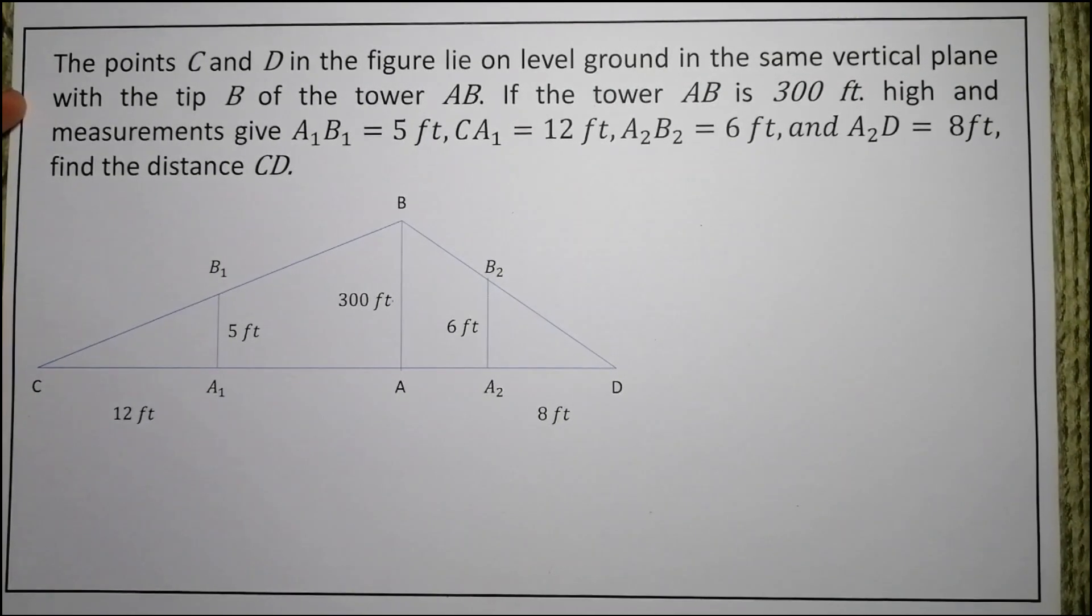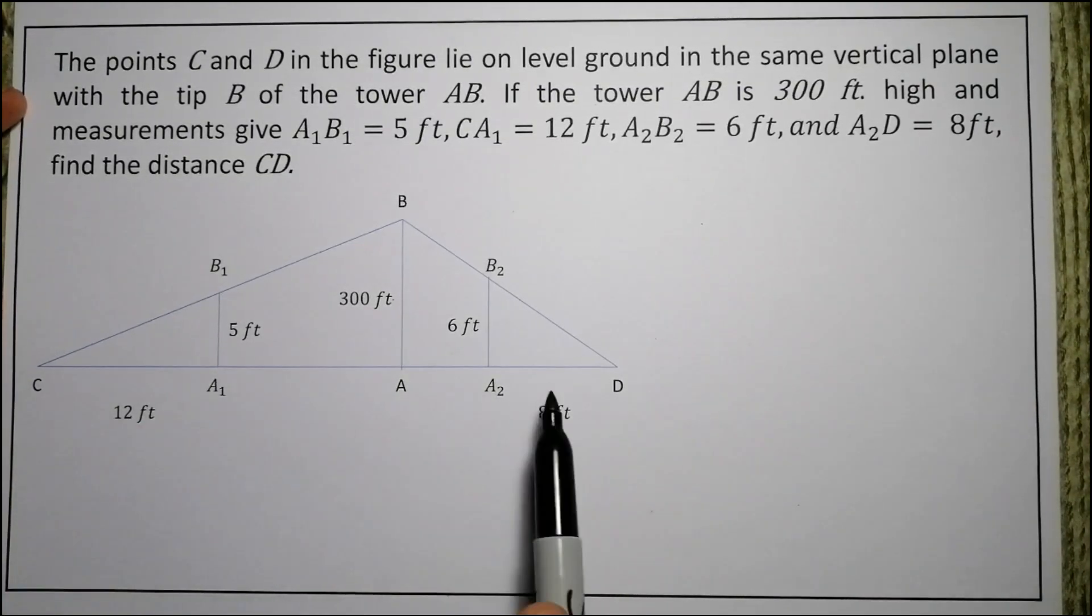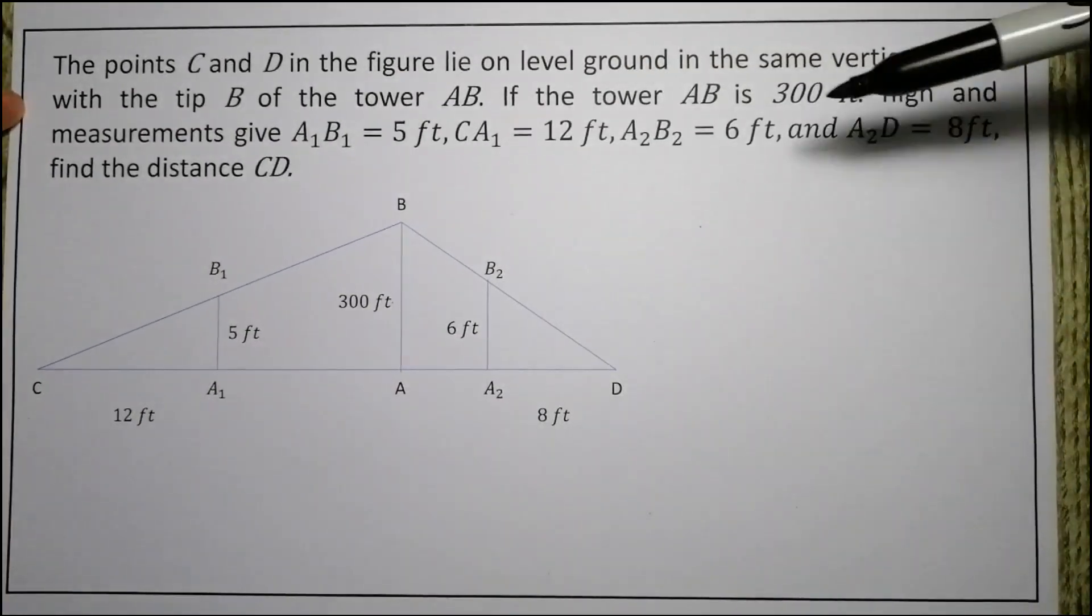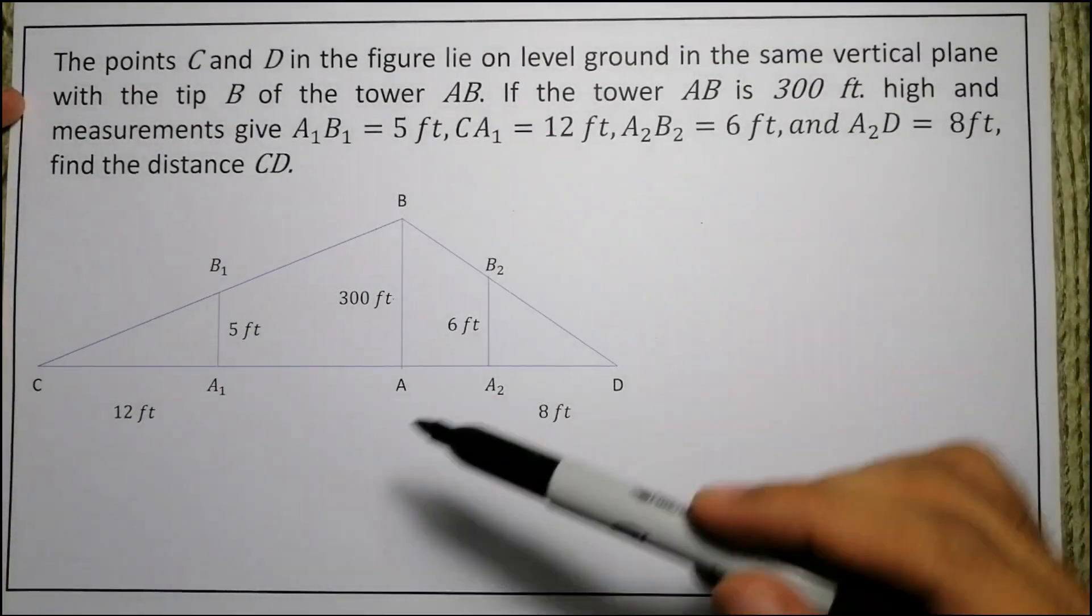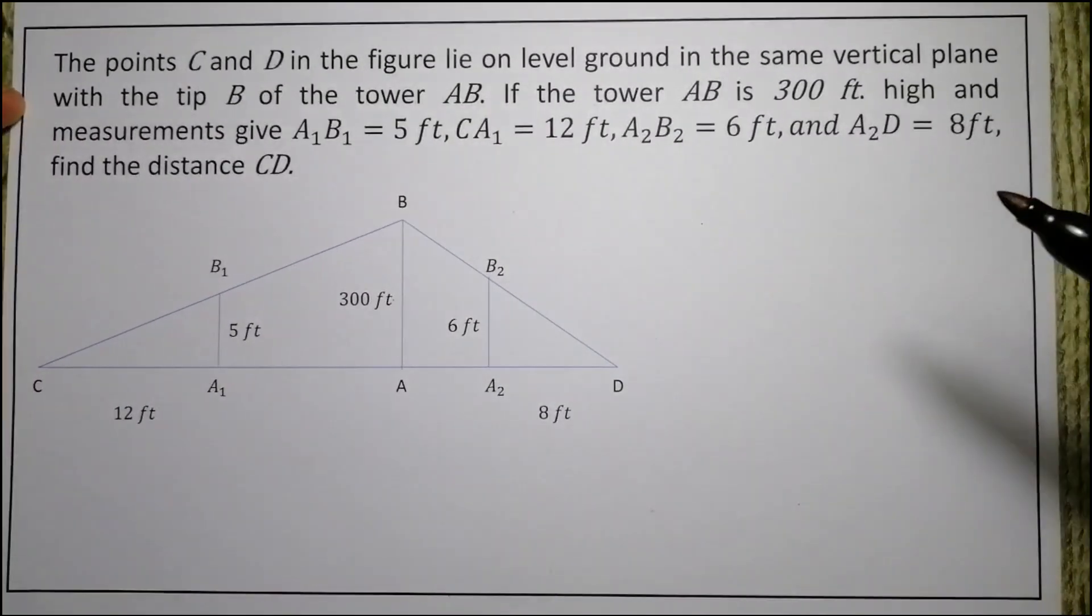So this problem says the points C and D lie on level ground in the same vertical plane with the tip B of the tower. If the tower AB is 300 feet, so this one from A to B, the measurement is 300 feet high.